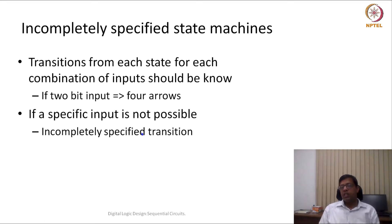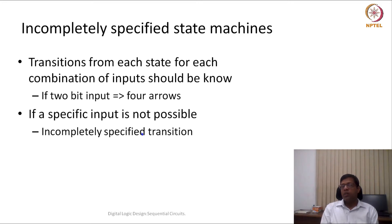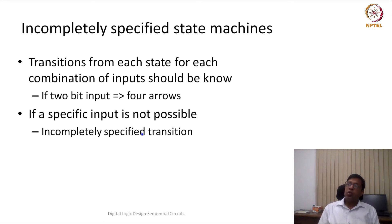Consider the first example: suppose it is known that the input is always going to be a BCD number. If the input is a BCD number, then the possibilities for 4-bit input could only be from 0000 to 1001. Any number greater than 9 is not possible. Because those numbers are not possible, those transition functions become incompletely specified.